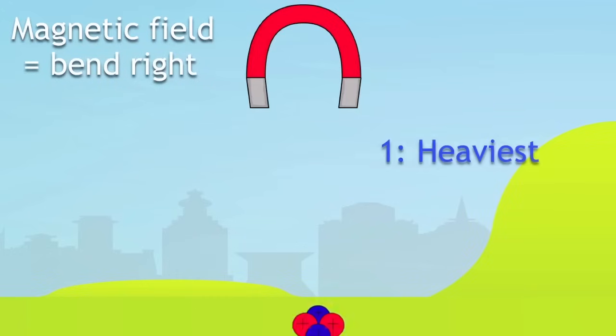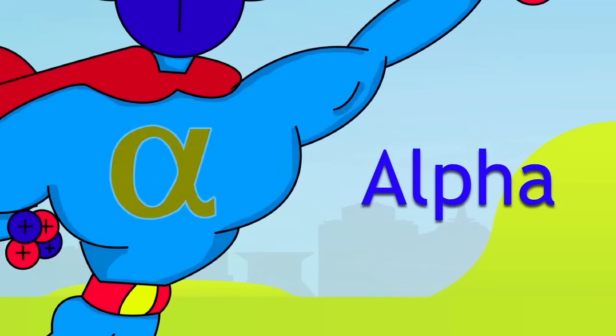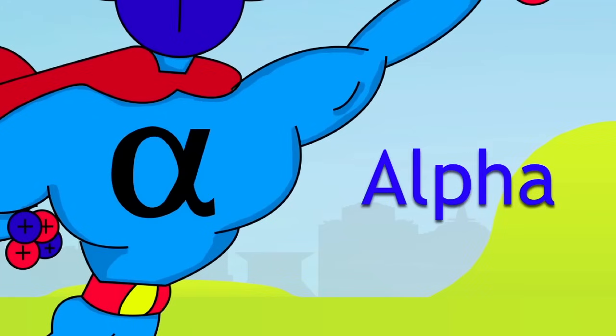One, that it's the heaviest of the radioactive particles. And two, it's the most heavily charged type of radiation. The symbol for alpha is this, the Greek letter alpha. It's not very penetrating. That means if it actually hits something, it stops.